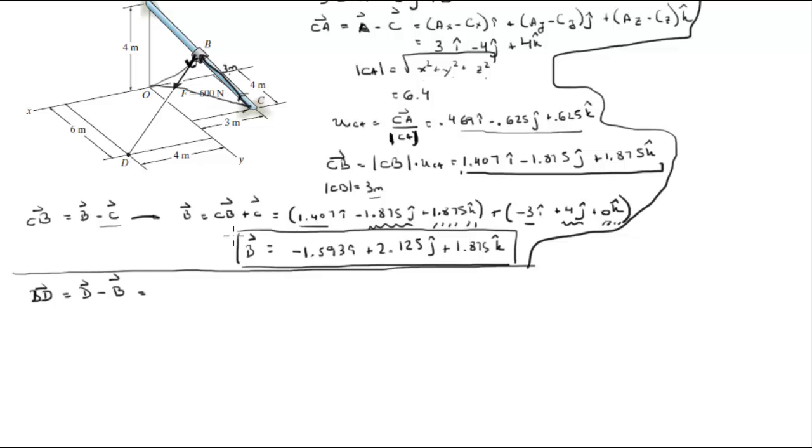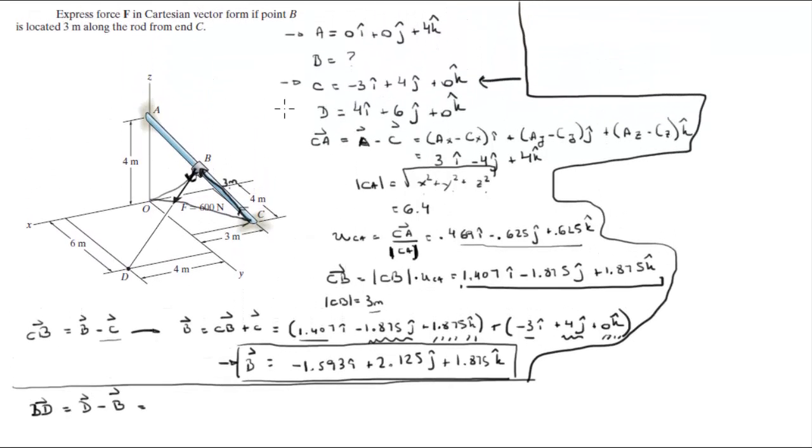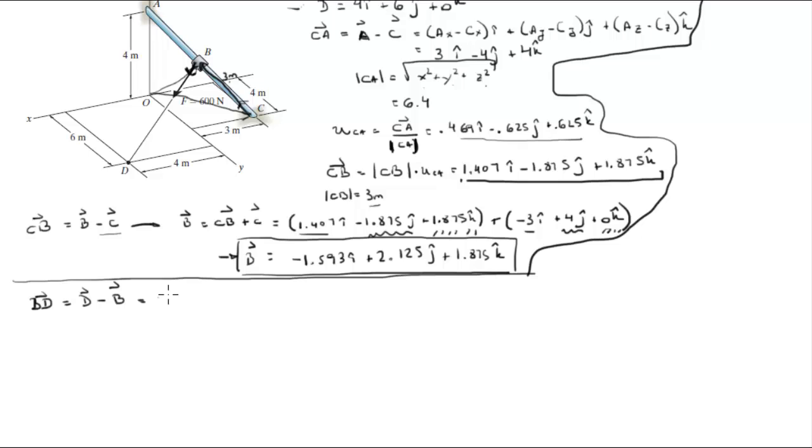Which is equal to, when you plug the numbers in from this vector and from this vector D right here, you're gonna get that this is equal to 5.593i plus 3.875j minus 1.875k.